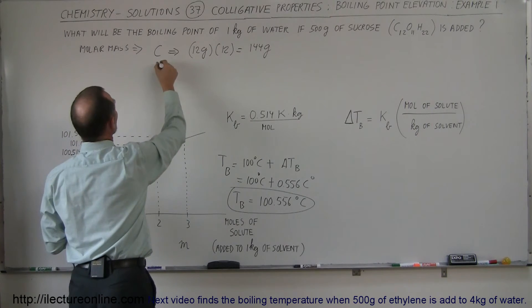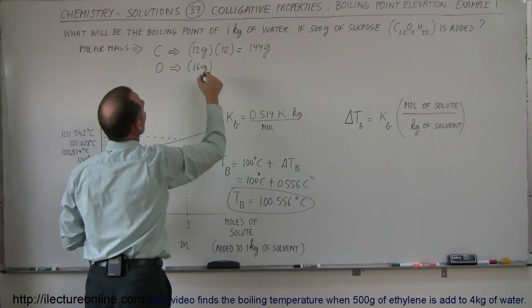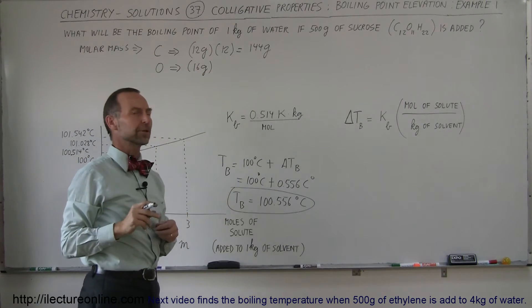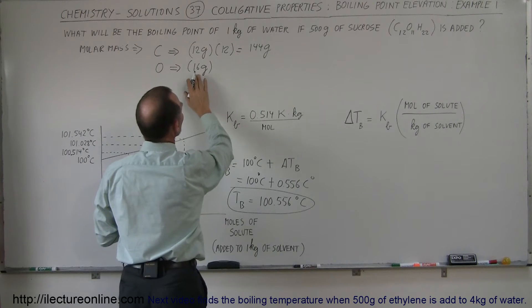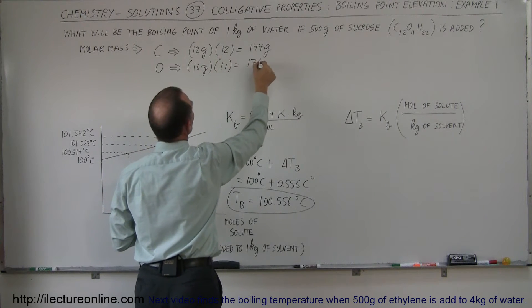We have 11 oxygen molecules. So for oxygen, we have 16 grams per atom. Did I say molecules? I really meant to say atoms. So we have 16 grams per atom. We have 11 atoms. That is 176 grams.